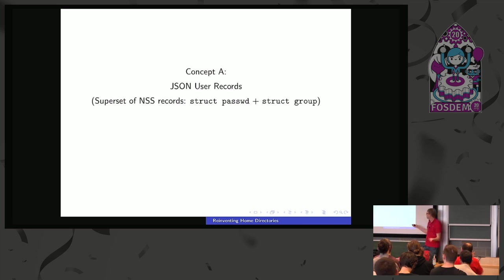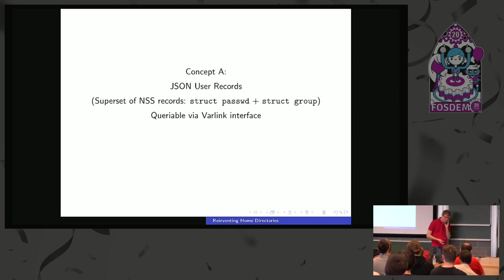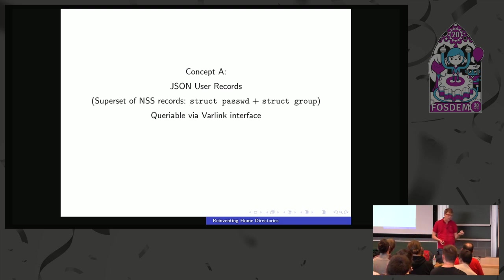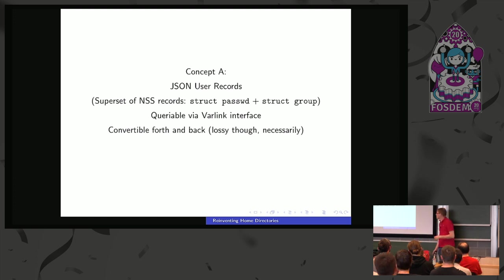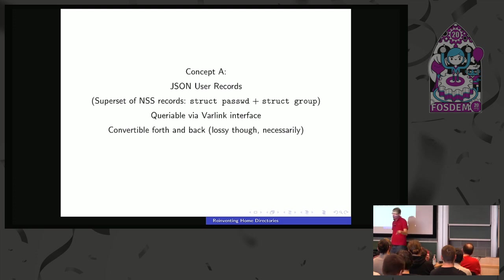It's a superset of NSS records — struct passwd, struct group, shadow records — and extensible. There's a varlink interface: varlink is an IPC system to query this, extremely dumb and simple. Any component that wants to provide a local user can just implement that varlink interface once, and clients can query them all simultaneously. It's convertible back and forth to NSS, lossily of course since NSS records don't have all the metadata. But systemd will do all the conversion for you — if you supply classic NSS stuff, we generate JSON on the fly, and vice versa.